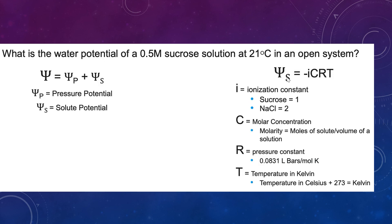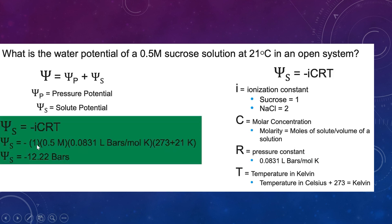So we're just going to plug in our numbers. So i, our ionization constant, sucrose, it's 1, so we plug in 1 for i. C is the concentration. It tells us it's 0.5 molar, so we'll put in 0.5 molar for C. R, we're going to use this number down here. And then T for temperature is 21 degrees, but the big thing is we need to first convert it to Kelvin. So we'll do 273 plus 21 and put that in for our temperature. So if you do that and then you multiply it all out, you should get negative 12.22 bars for our solute potential. So don't forget the negative. Negative is very important. And this is, again, because that solute potential is 0, so therefore our total potential will equal our solute potential.